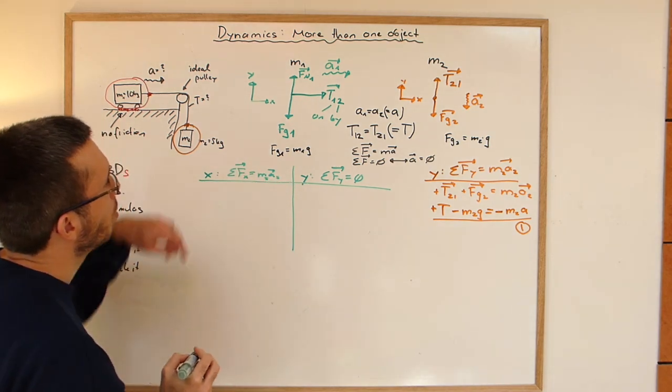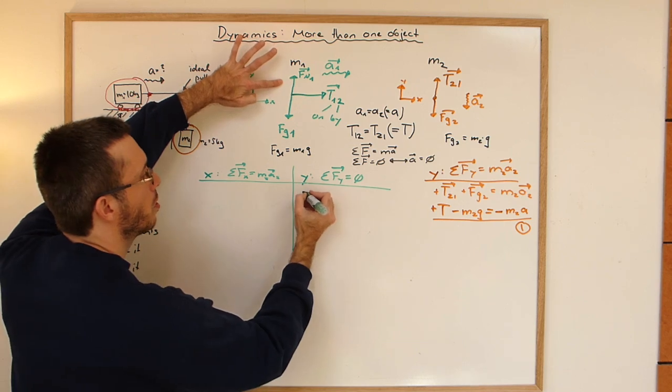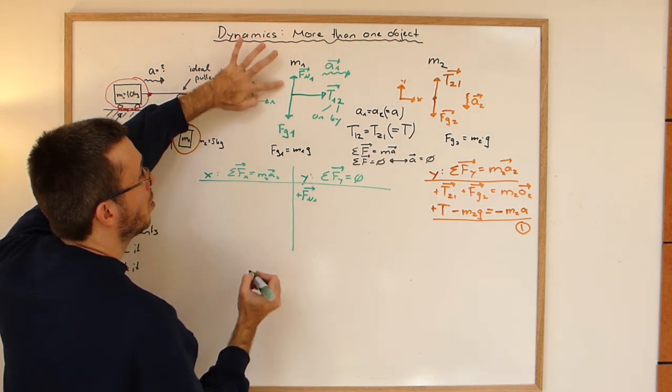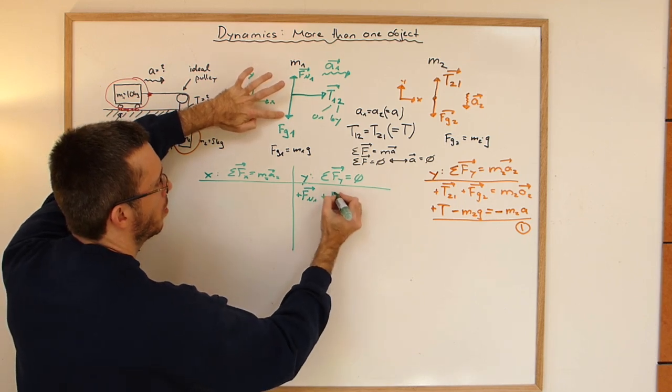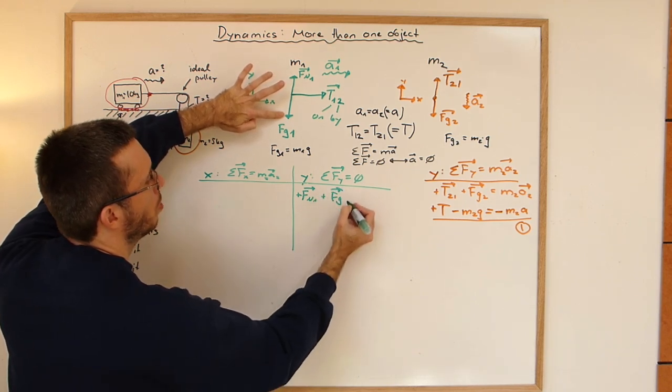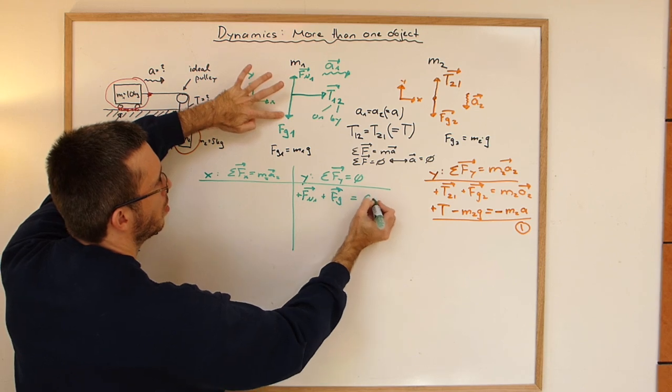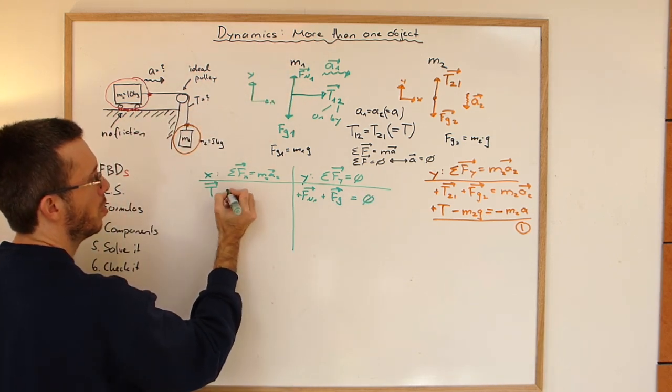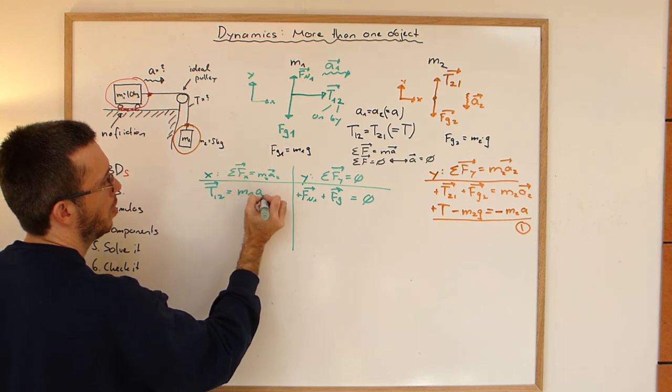What are my forces? The normal force goes in y. Gravity goes in y plus Fg and so on. And my tension, tension 1,2, is mass 1 A1. So if I plug it in with my magnitudes, tension is mass 1 A.